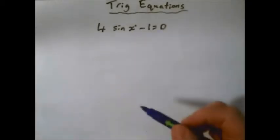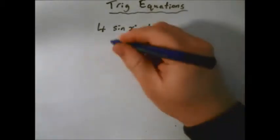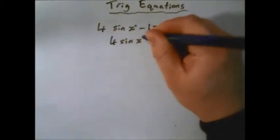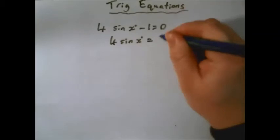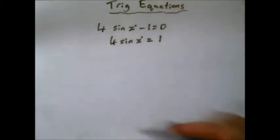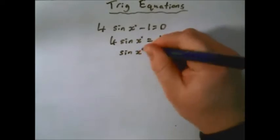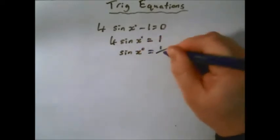To begin with, we're just going to rearrange it like we would an ordinary equation. So we've got 4 sin x, we've got minus 1 on this side is going to become plus 1 on that side. And the next step is to get rid of the 4, so it's multiplying the sin x, so we move it across, that's going to give us divide, which gives us a quarter.